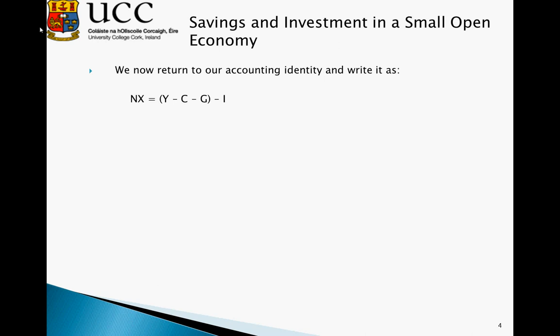Now, let's look at our income accounting framework and rearrange it so that we get net exports. Our net exports are equal to Y minus C minus G minus I. What we can work out from this is consumption and savings. We can see that on the right-hand side we have savings minus the investment level. Y gives total income; if we take away C, and Y minus T — which is the proportion of income consumers spend — and G, which is the proportion the government spends, we get a residual amount. We assume this leftover amount goes into savings S. So our left-hand side is net exports, and our right-hand side is savings minus investment.